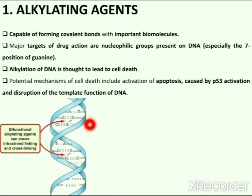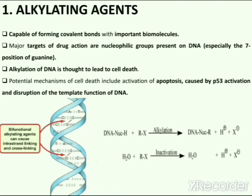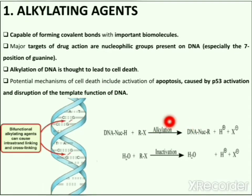In this picture you can see the double strand DNA structure. Alkylating agents bind to the guanine residue at the 7th position. They cause inter-strand linking and cross-linking. This is the mechanism of alkylation: alkylating agents bind to DNA at the 7th position of the guanine residue and cause alkylation of DNA, which results in inter-strand linking and cross-linking.